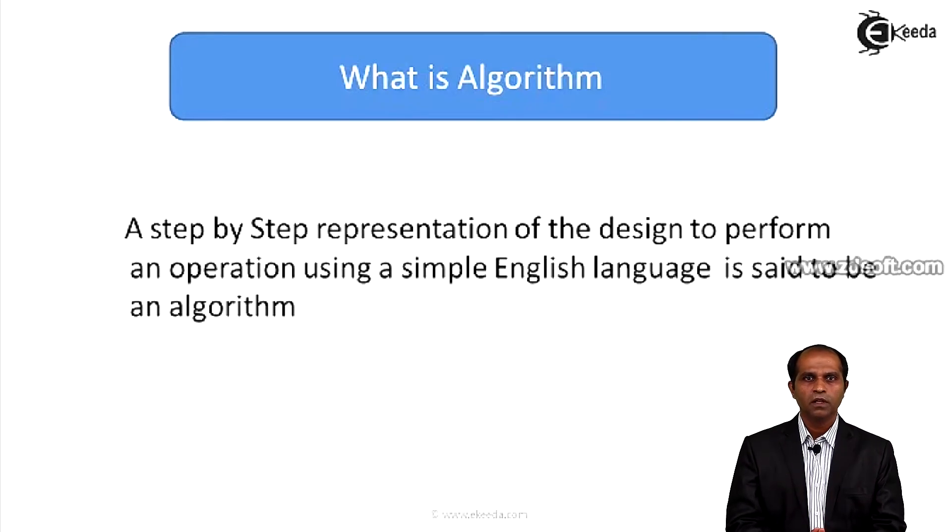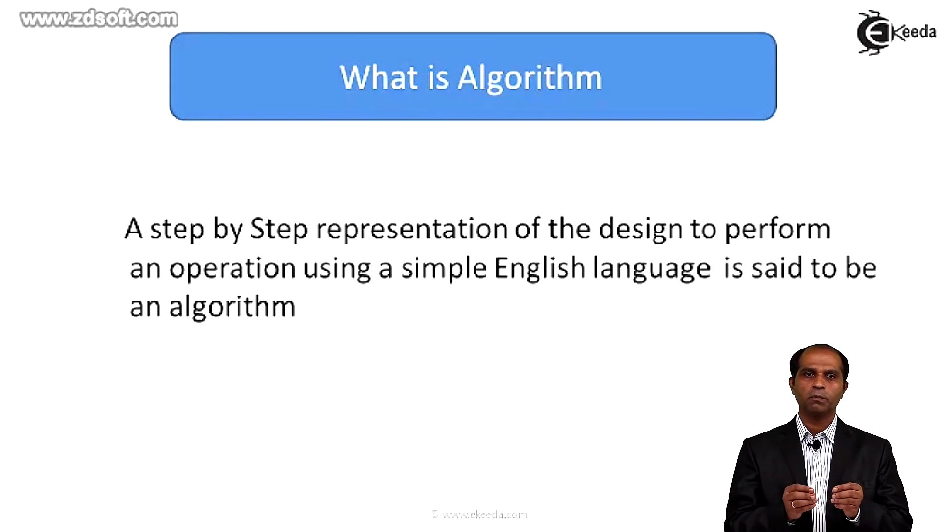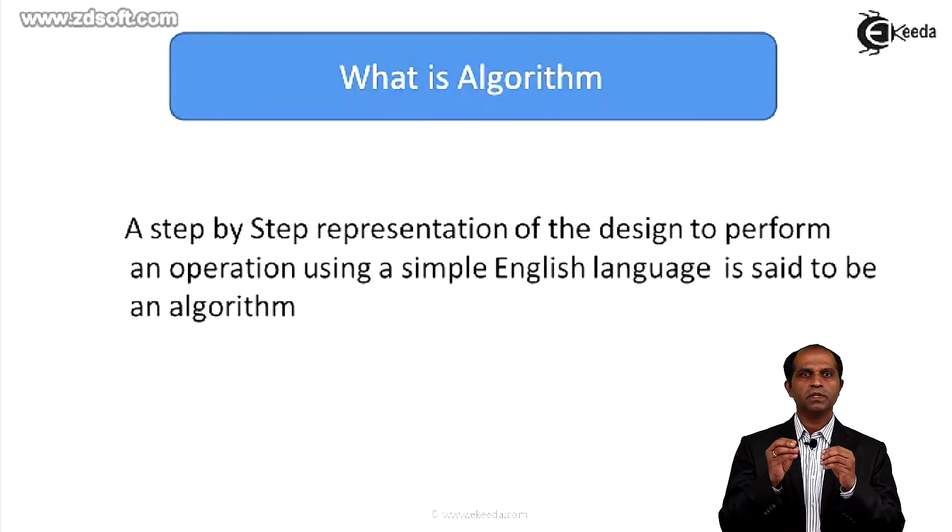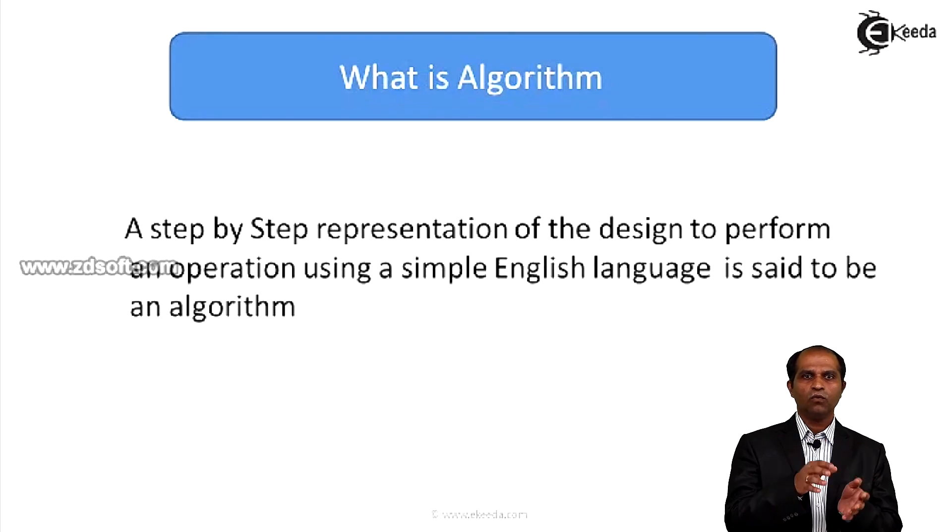The very first step of an algorithm is always said as start. Then we can write statements: input statement, output statement, and processing part. Once these steps have been said by numbering them as one, two, three, four, five, six, seven, eight and so on, we can go for implementing this algorithm into a coding language.